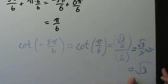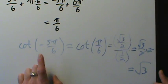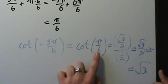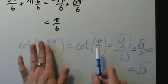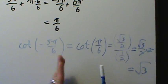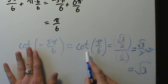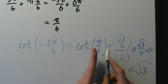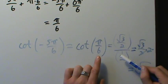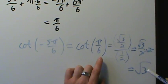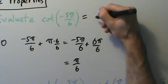So our answer is √3. By periodic properties, cotangent of negative 5π over 6 equals cotangent of π over 6, because cotangent has period π and these two angles differ by π. Since π over 6 is a special angle on the unit circle, we compute x-coordinate divided by y-coordinate: (√3/2) divided by (1/2) simplifies to √3.